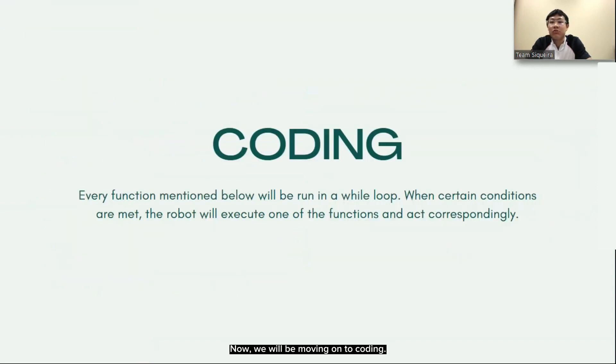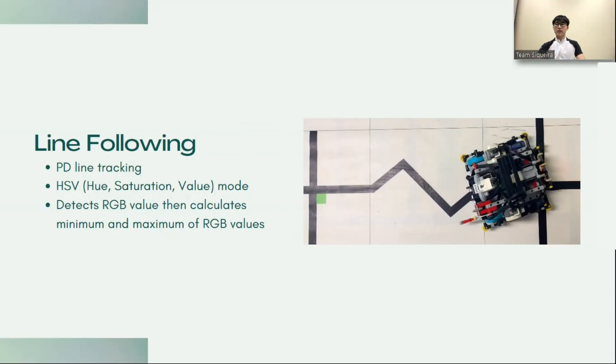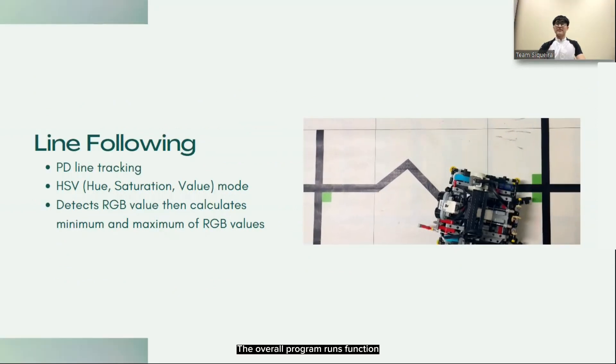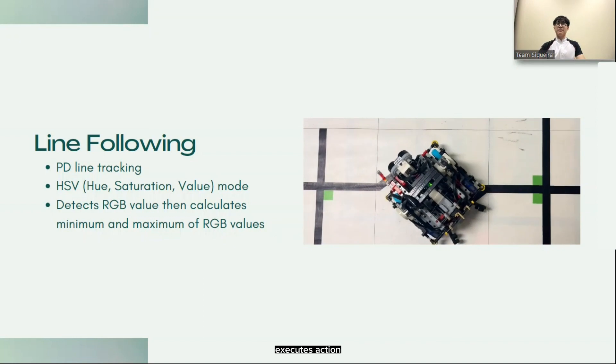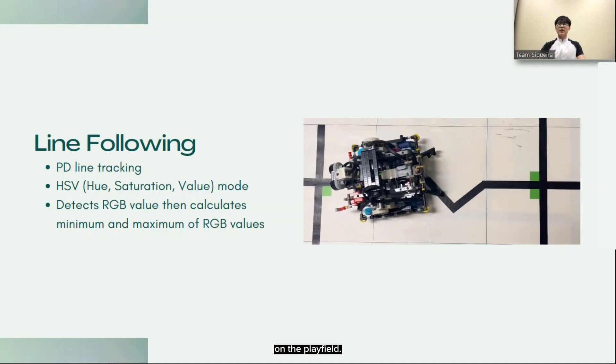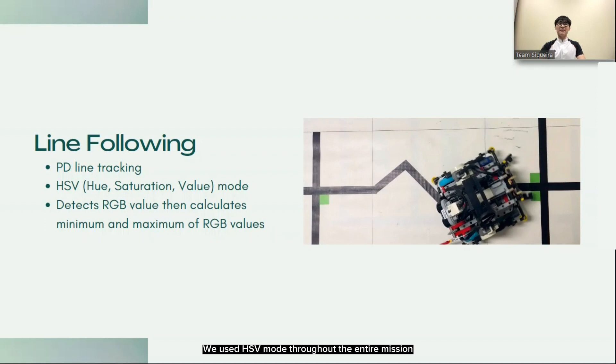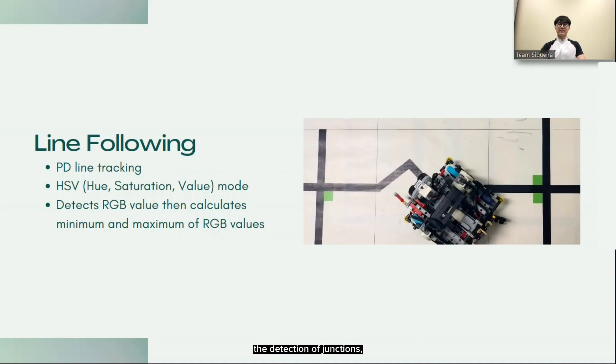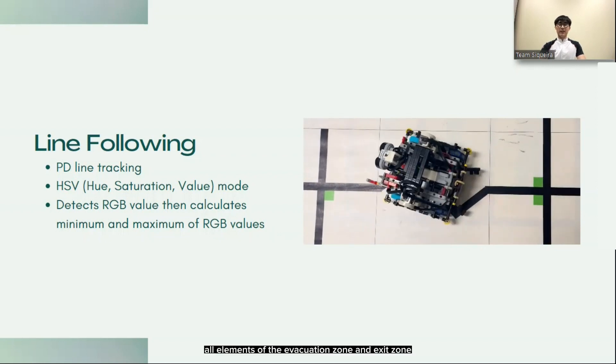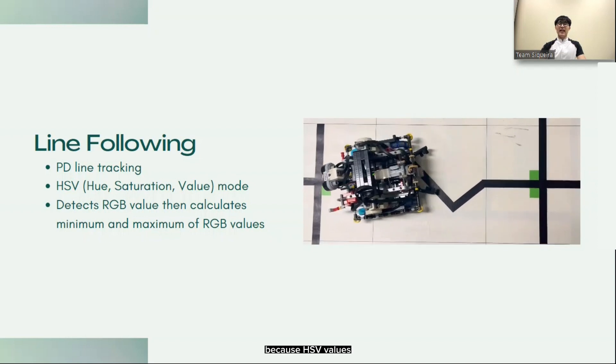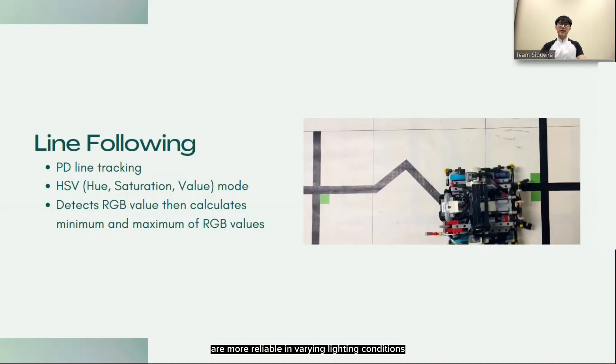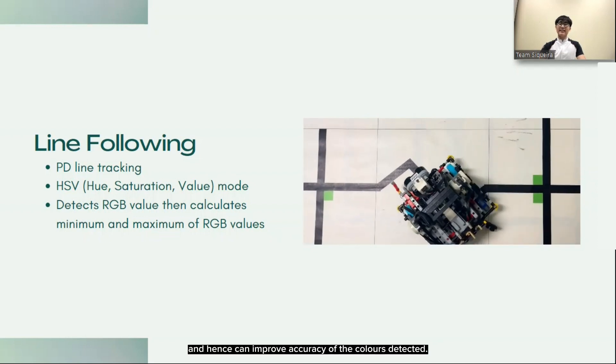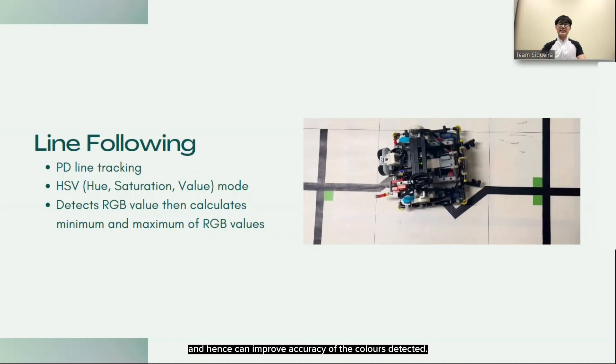Now we will be moving on to coding. The overall program runs functions in a loop and executes actions based on encountering certain situations on the playfield. We use HSV mode throughout the entire mission for line following, the detection of junctions, all elements of the evacuation zone and exit zone because HSV values are more reliable in varying lighting conditions and hence can improve accuracy of the colors detected.